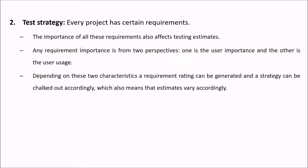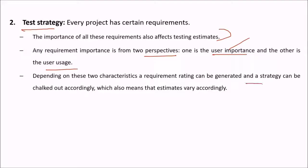Regarding test strategy: a project has certain requirements, and the importance of all these requirements is going to affect the testing estimates. The importance of any requirement is viewed from two perspectives: user importance and user usage. Depending on these two characteristics, a requirement rating can be generated and a strategy can be worked out accordingly, which also means the estimates vary accordingly.